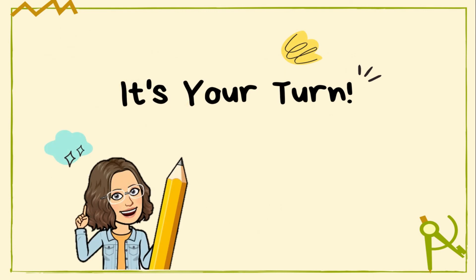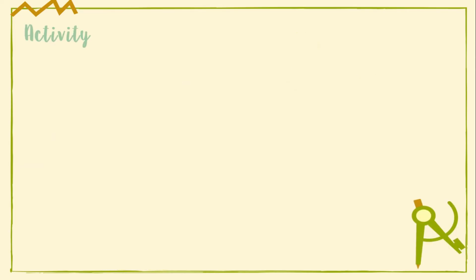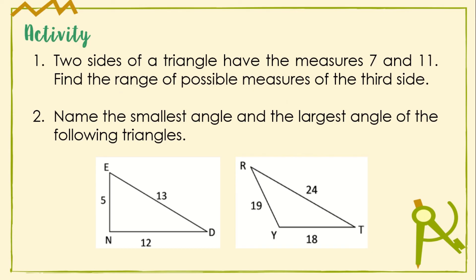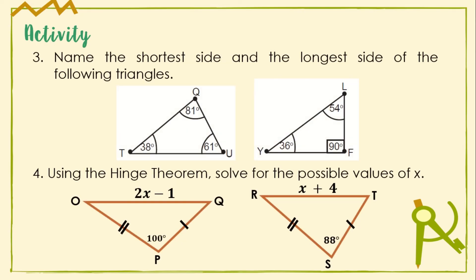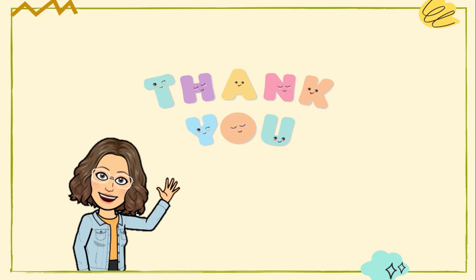That ends our lesson. It is now your turn to practice by answering the given activity. Number 1: two sides of a triangle measure 7 and 11 — find the range of possible measures of the third side. Number 2: name the smallest and largest angles of triangles END and RYT. Number 3: name the shortest and longest sides of triangles QTU and LYF. Number 4: given triangles OPQ and RCT, solve for the possible values of X. Thank you for your time and effort. This is Teacher Eliza May Kunanan, your grade 8 mathematics teacher. Have a good day and God Bless!